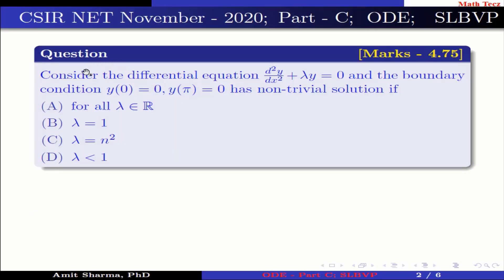The question is: consider the differential equation d²y/dx² + λy = 0 with boundary conditions y(0) = 0 and y(π) = 0. This has a non-trivial solution if: option (a) for all λ ∈ ℝ, option (b) λ = 1, option (c) λ = n², option (d) λ < 1.